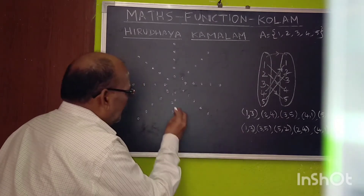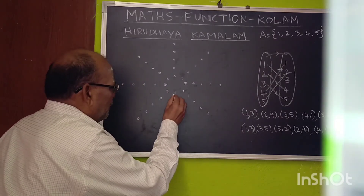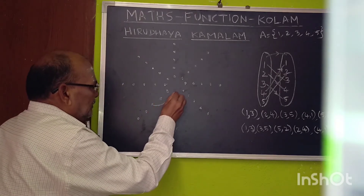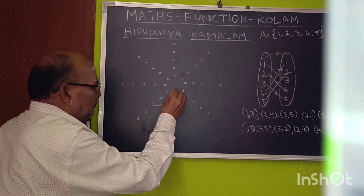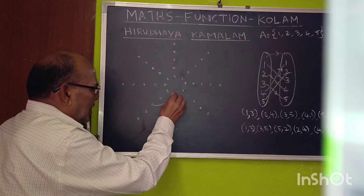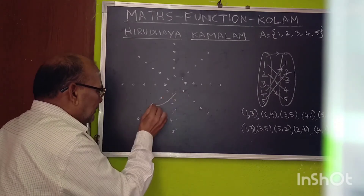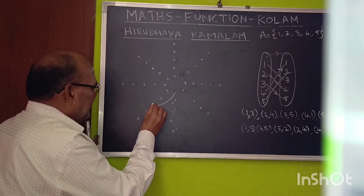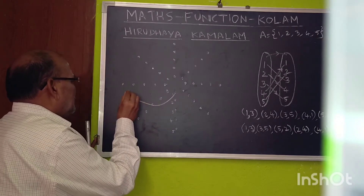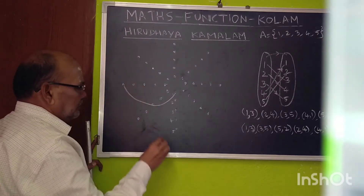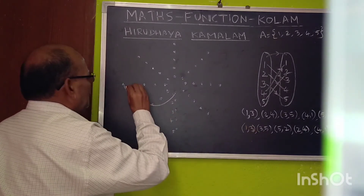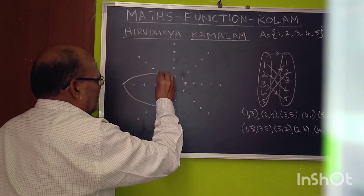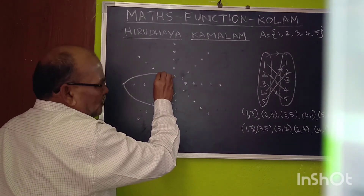I am going to draw from 1 to 3. This is the first element of this row, and this is the third element. 1 to 3, then 3 to 5, then 5 to 2.